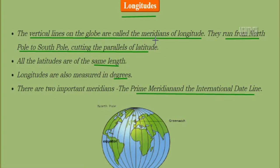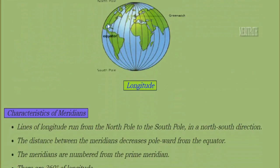Longitudes are vertical lines that pass on the globe, also known as meridians. They run from the north pole to the south pole, cutting across the parallel lines of latitudes. While latitudes are horizontal lines, longitudes are vertical lines. All longitudes are of the same length and are also measured in degrees. Two important meridians are the prime meridian and the international date line.